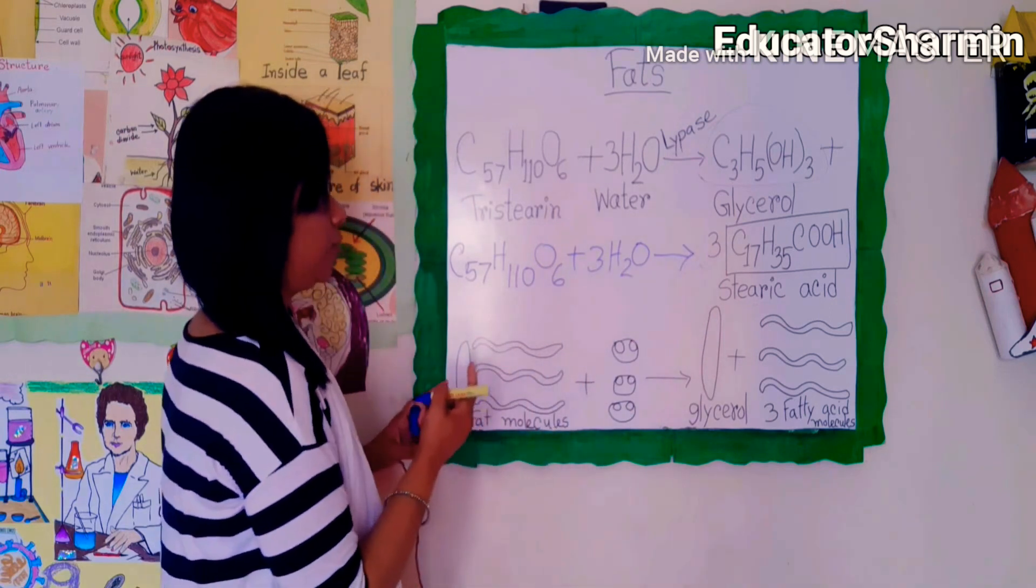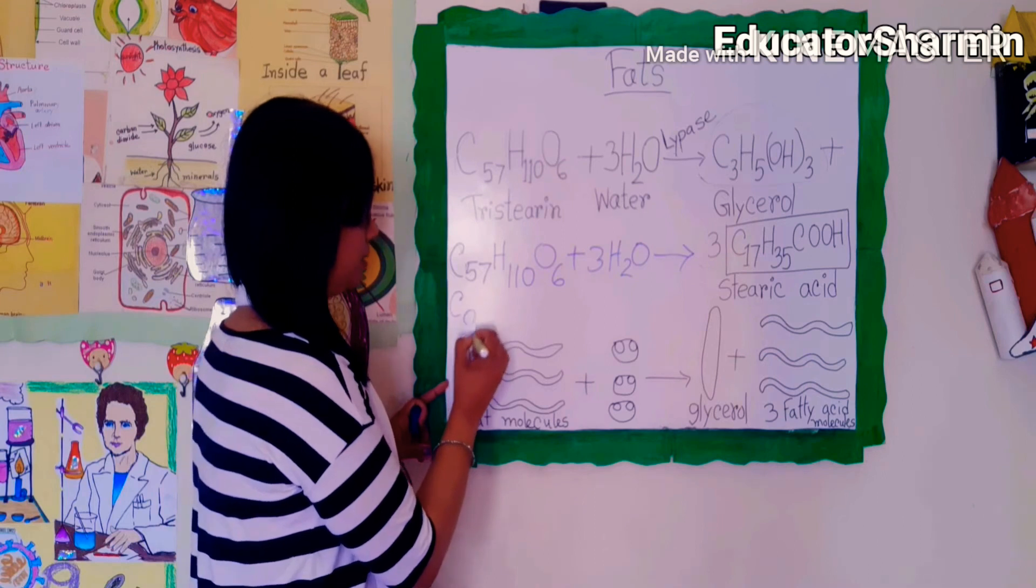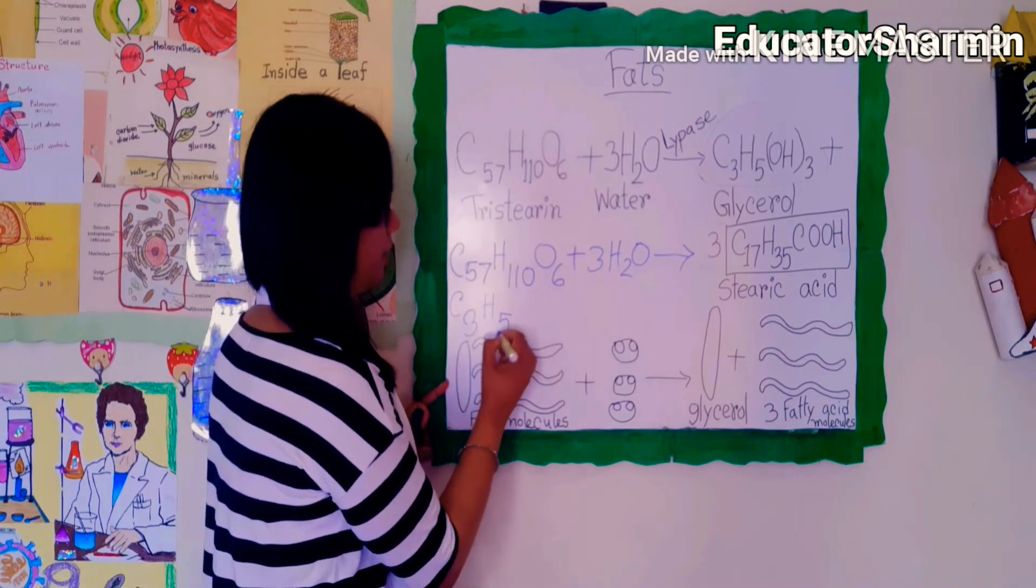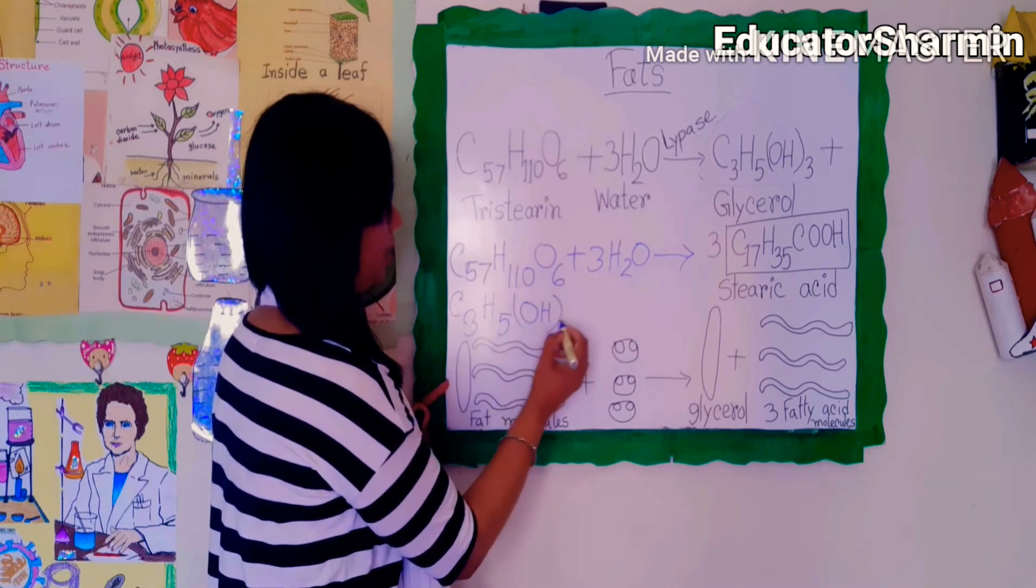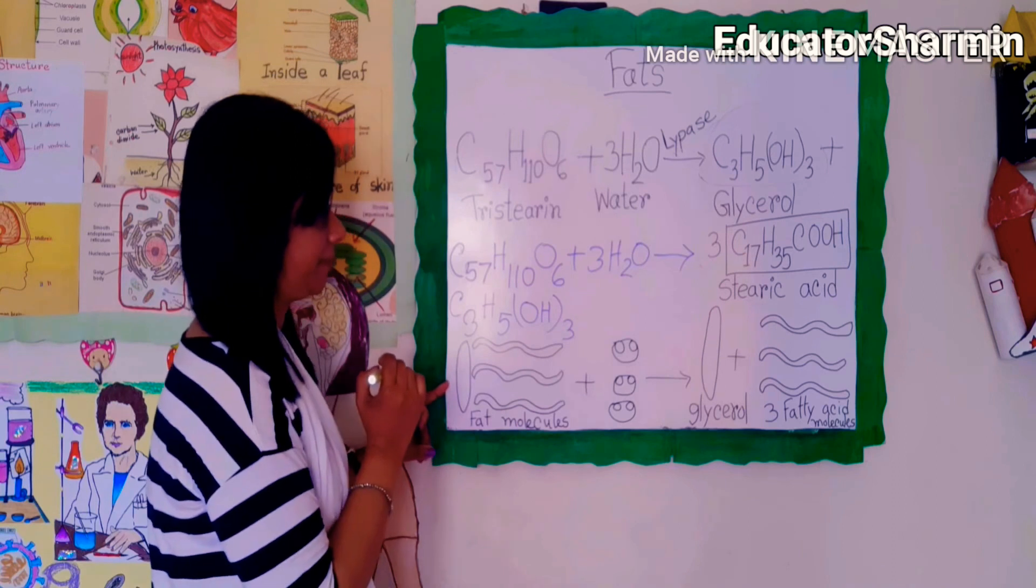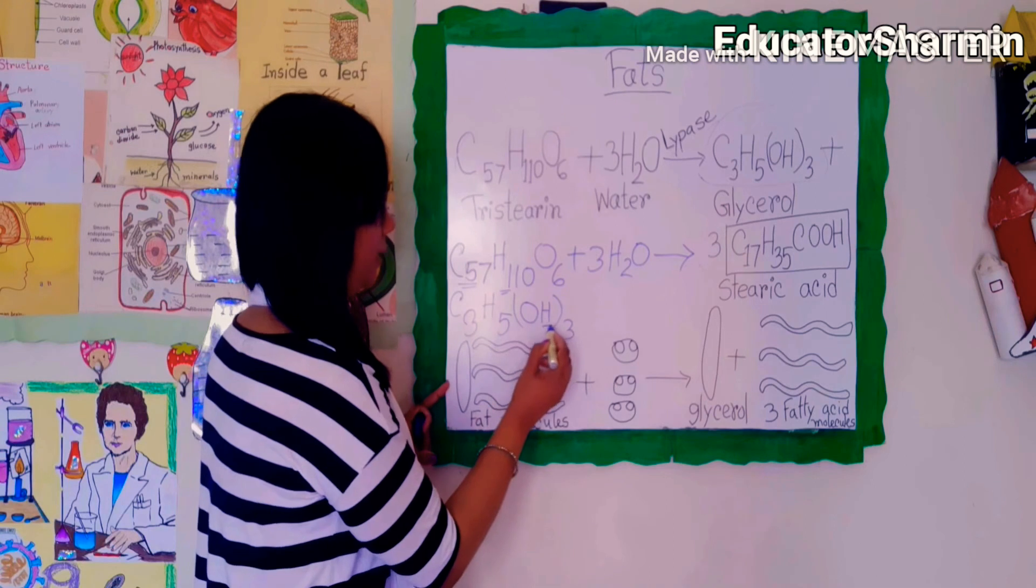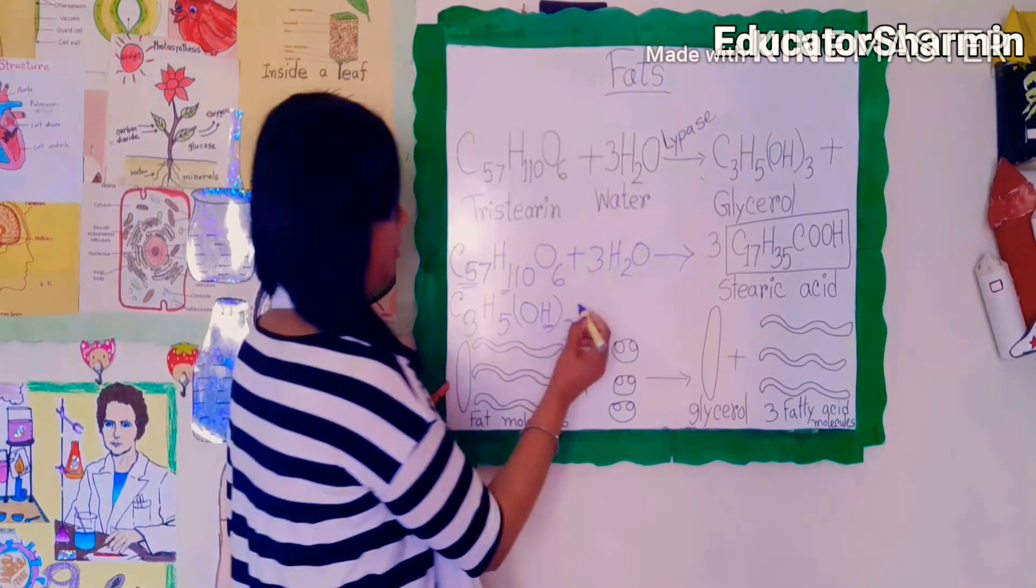Here is glycerol: C3H5(OH)3. That's C3H5 with three hydrogen atoms and three oxygen atoms.